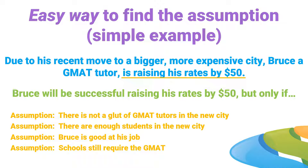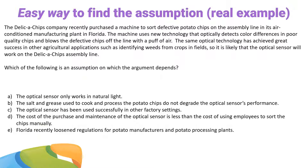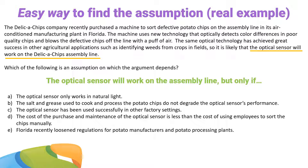Let's take a look at a more realistic example, pretty similar to what you might find on the test. Take a second, read this to yourself, pause the video if you need to. The very first thing we need to do is pick out the conclusion. We're going to install this optical sensor on the delicious chip assembly line — that's the conclusion. So to find the assumption, we say: 'The optical sensor will work on the assembly line, but only if...' and the answer choice that logically completes that sentence is correct.